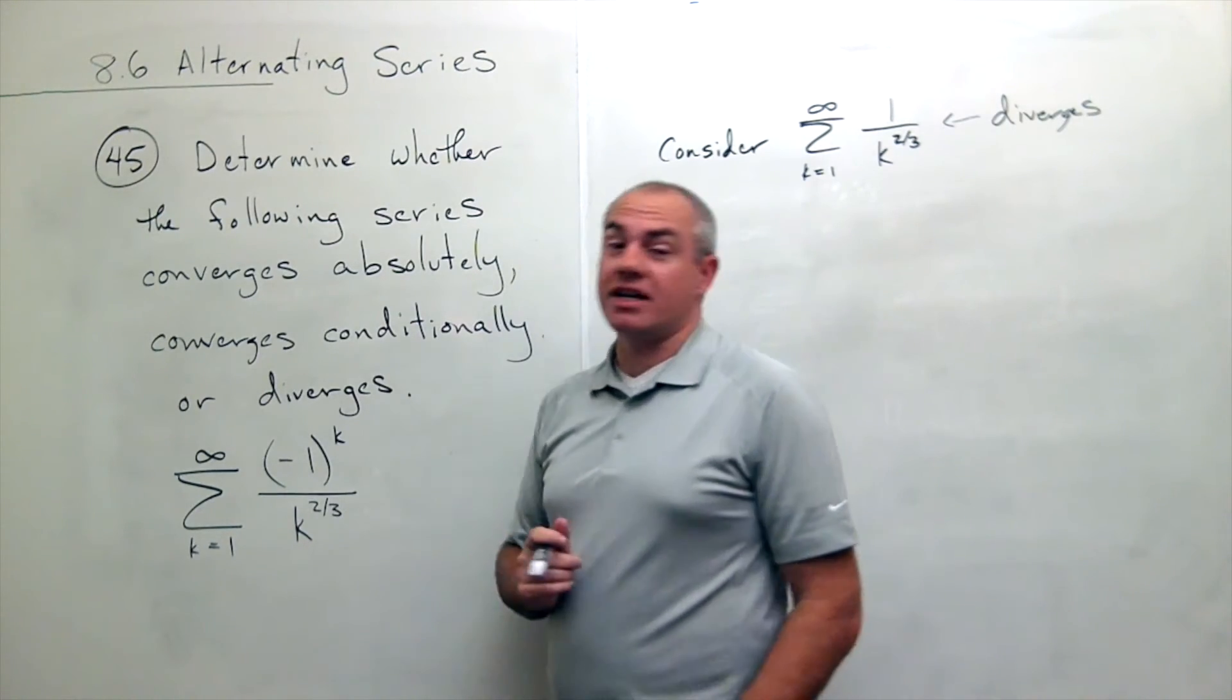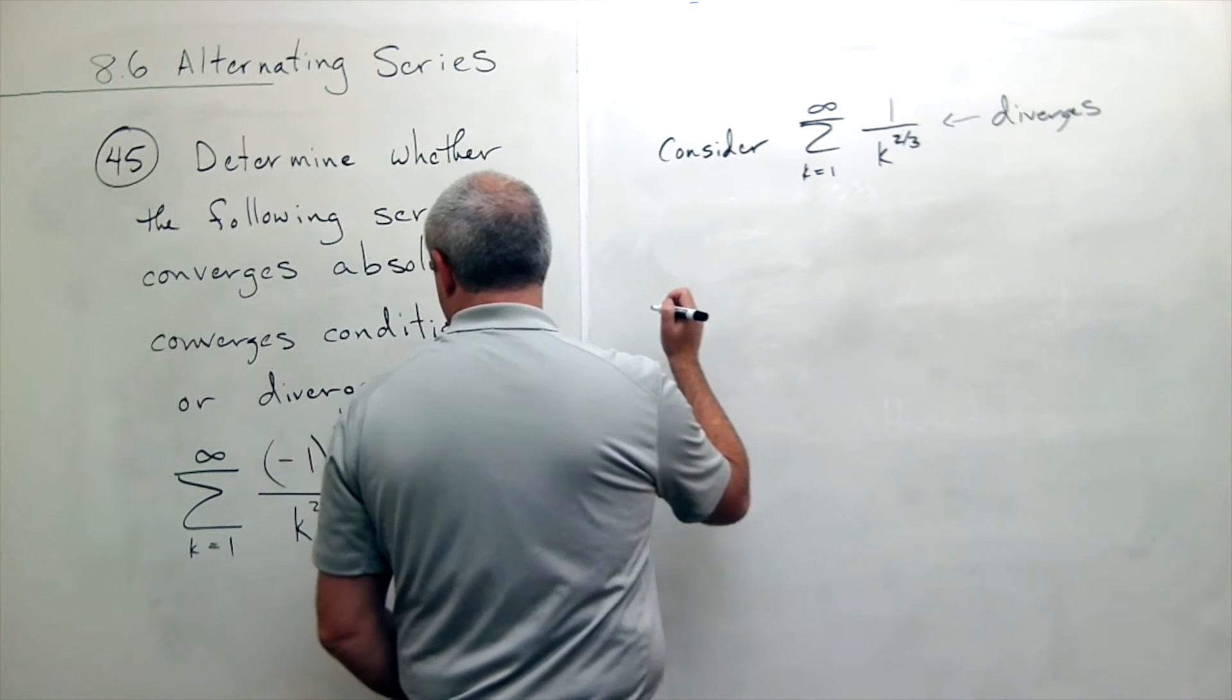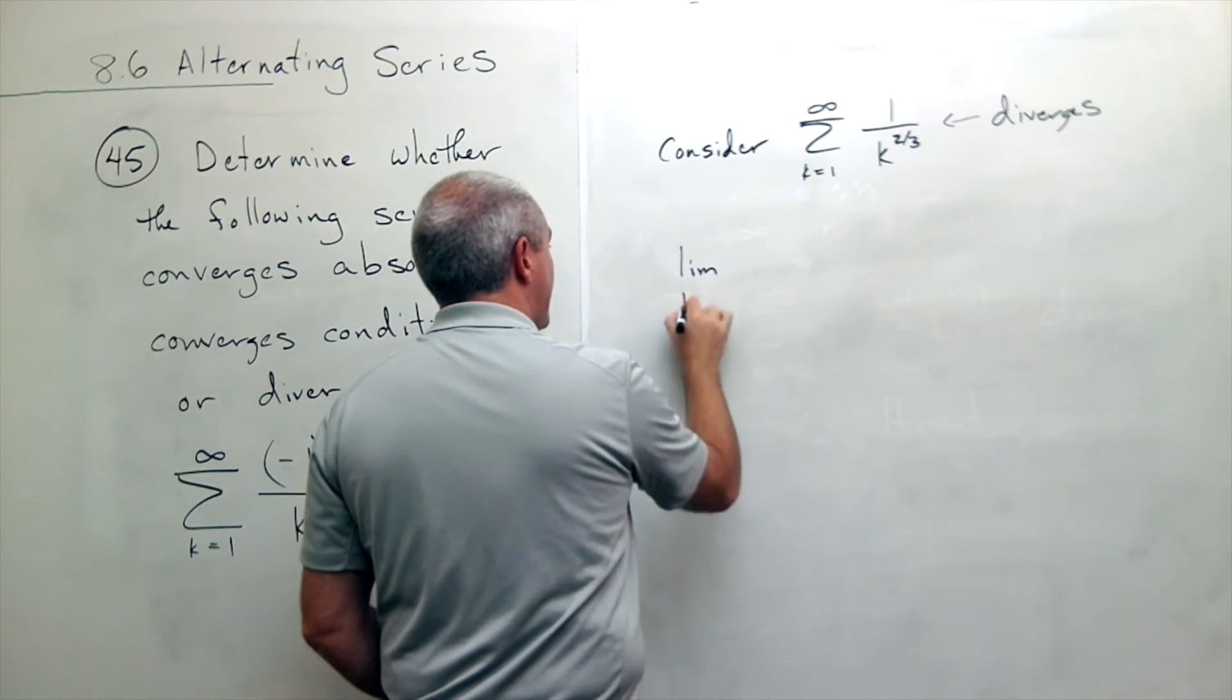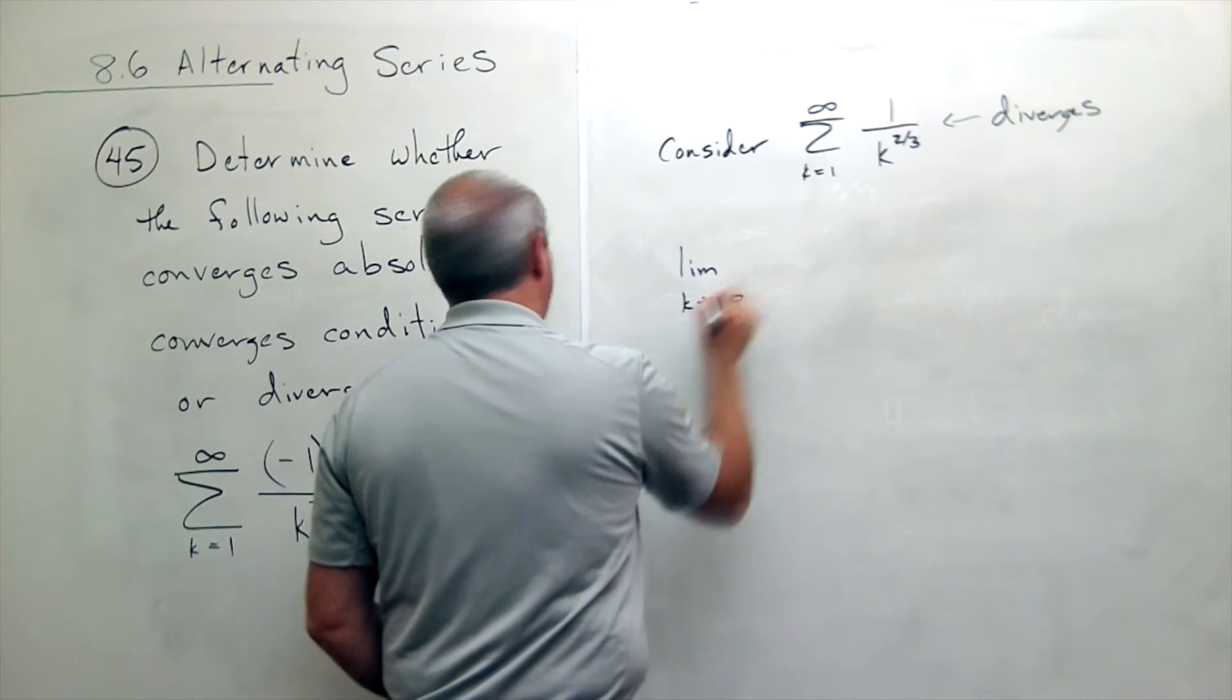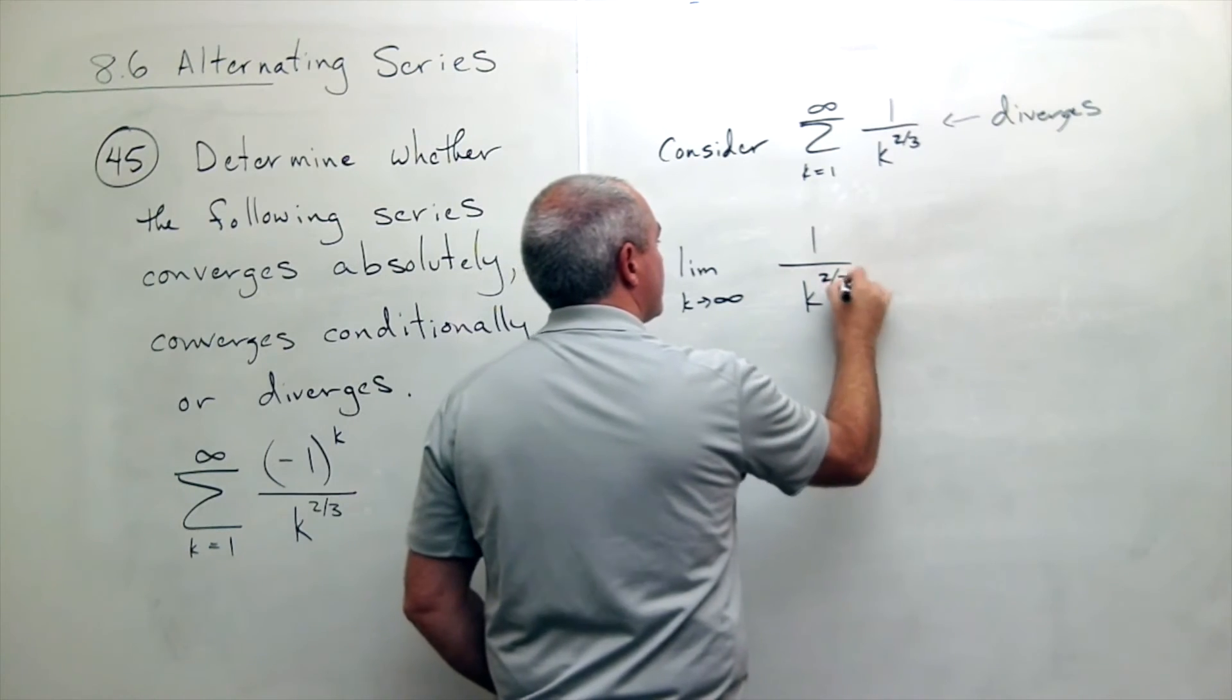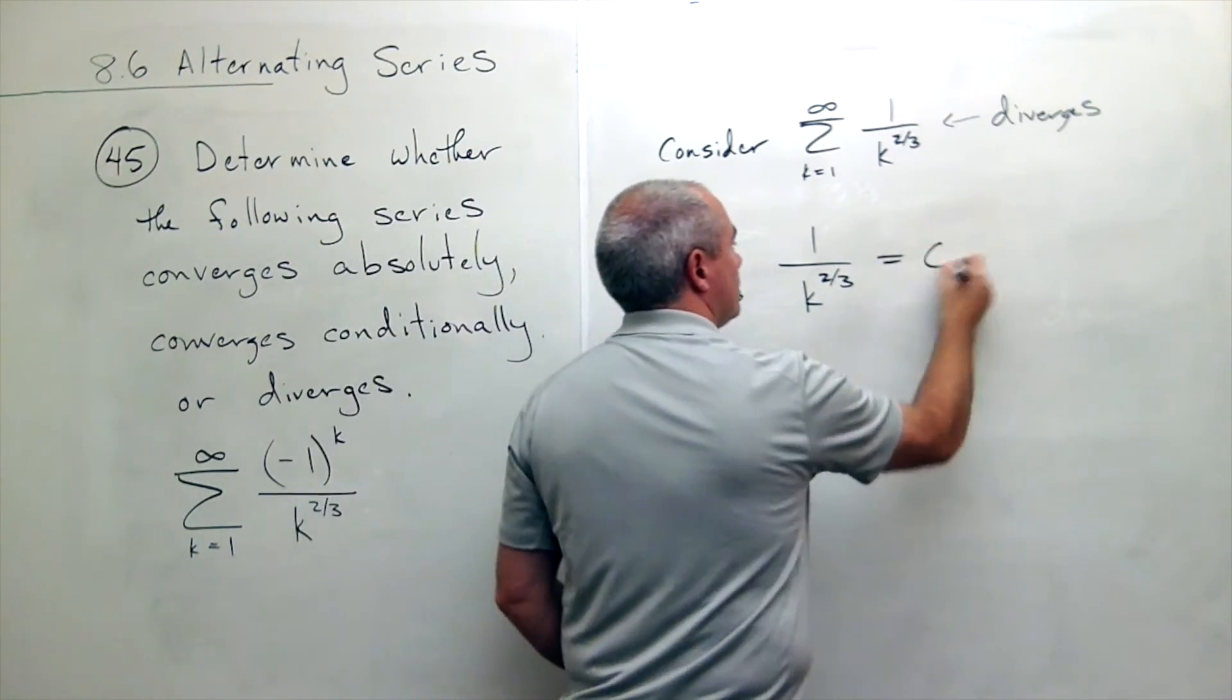And then I can use the alternating series test. So now I'd like to look at the limit, as k goes to infinity, of 1 over k to the 2/3. Well this is fairly clearly 0.